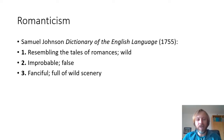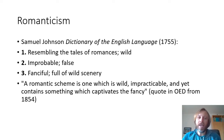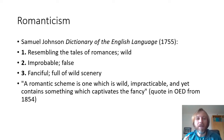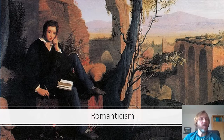Mainly this is a negative definition. And if we look roughly 100 years later into the Oxford English Dictionary from 1854, they're quoting for the use of Romantic this sentence: 'A Romantic scheme is one which is wild, impractical, and yet contains something which captivates the fancy.' So in 1854 — by a time that Romanticism has already happened — we can see there is still this negativity of 'impractical, wild,' but at least the acknowledgement that there is something in there which captivates the fancy.